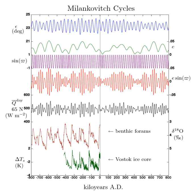Of all the orbital cycles, Milankovitch believed that obliquity had the greatest effect on climate, and that it did so by varying the summer insolation in northern high latitudes. Therefore, he deduced a 41,000-year period for ice ages. However, subsequent research has shown that ice age cycles of the Quaternary glaciation over the last million years have been at a 100,000-year period, which matches the eccentricity cycle. Various explanations for this discrepancy have been proposed, including frequency modulation or various feedbacks from carbon dioxide, cosmic rays, or from ice sheet dynamics.